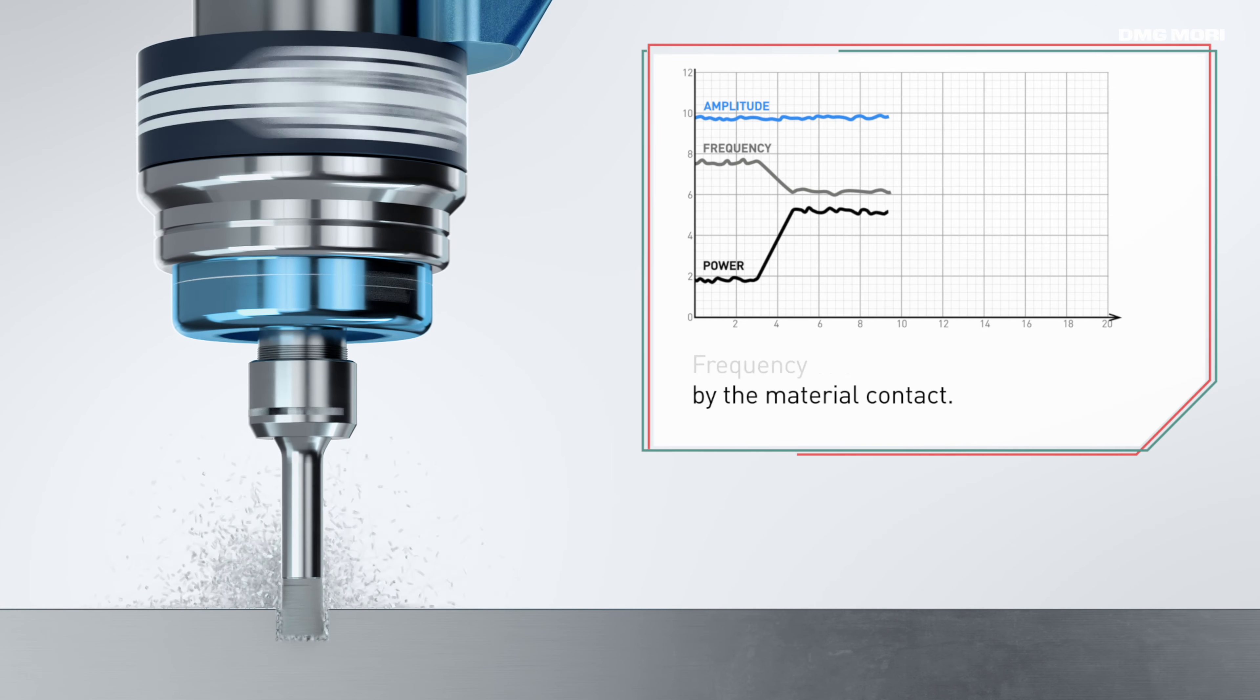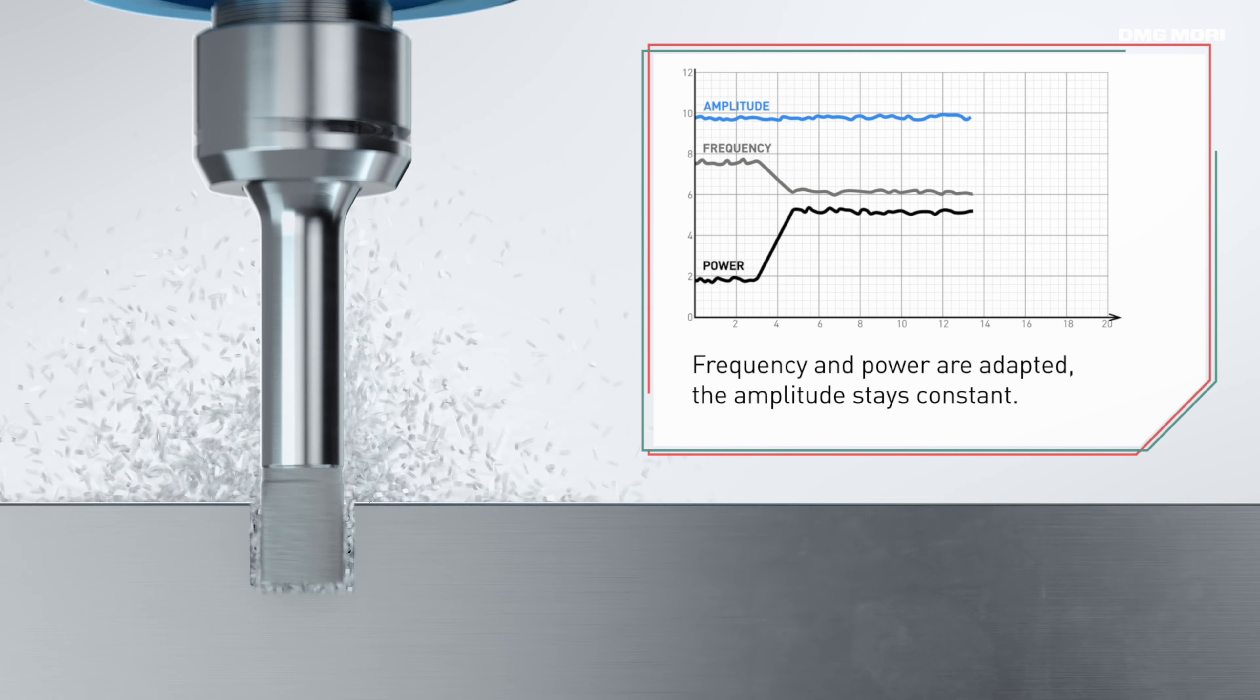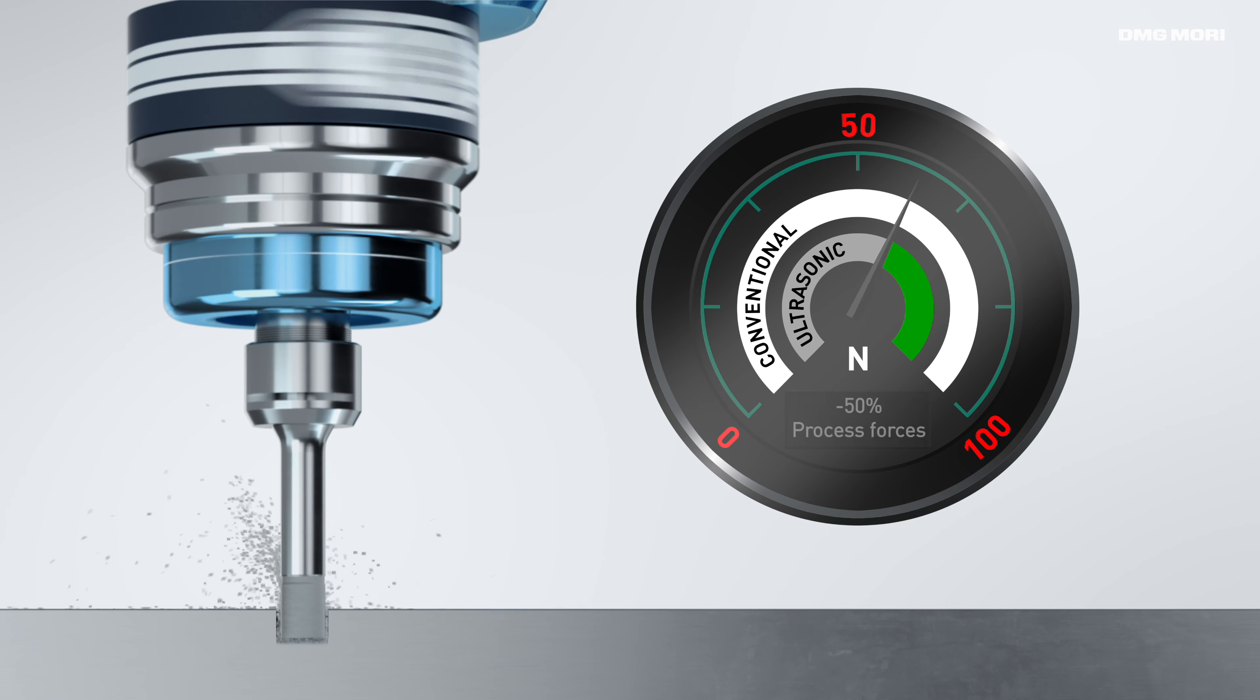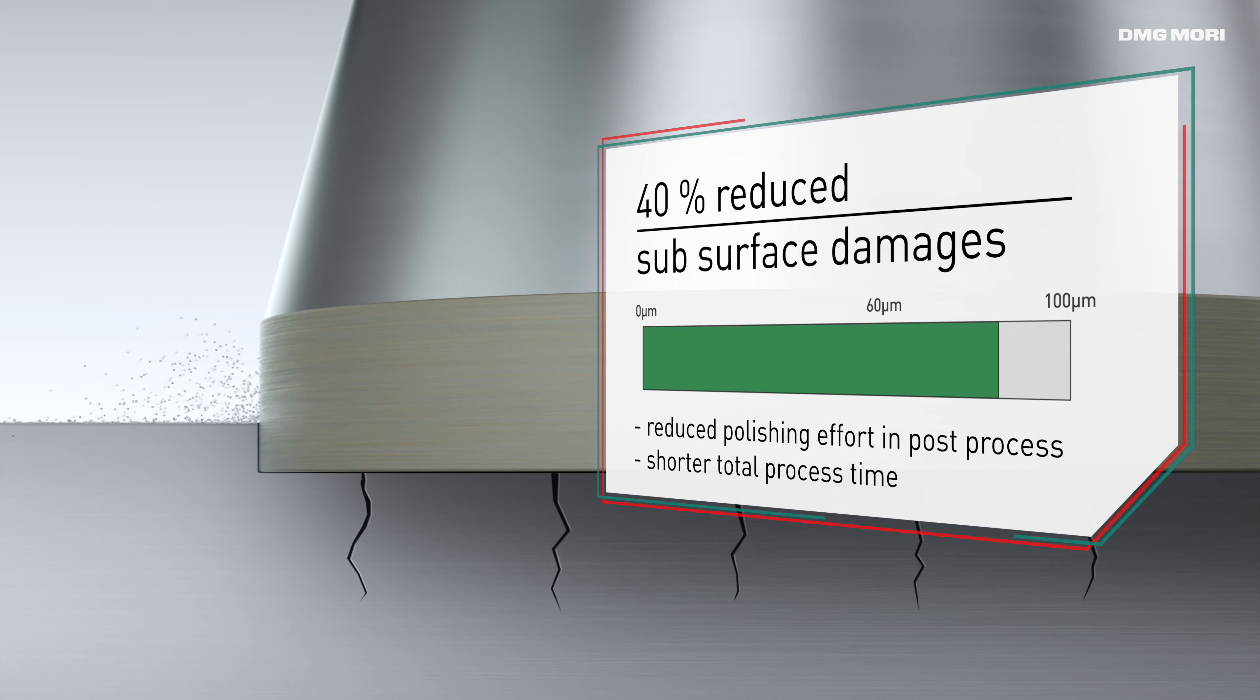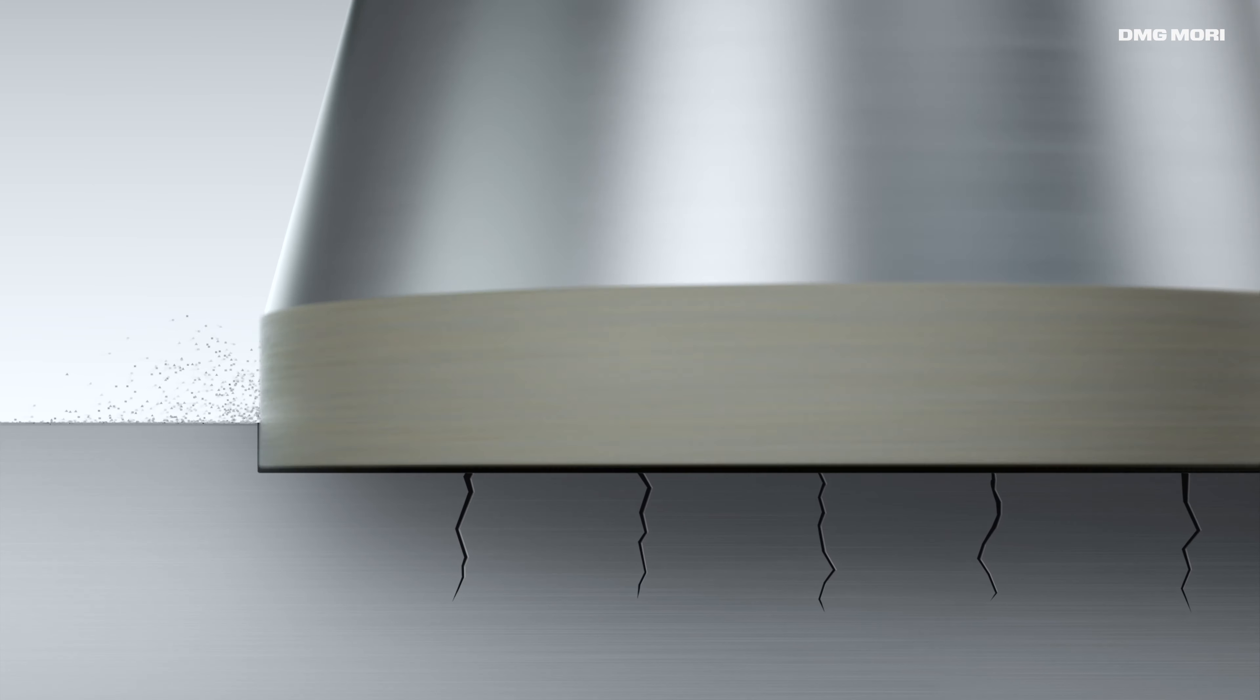In this way, the process forces acting on the single workpiece can be reduced by up to 50%. This leads to minimizing the subsurface damage by up to 40%. Depending on the material and the tool used,